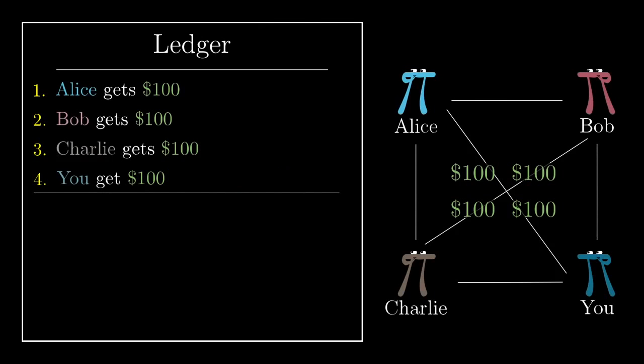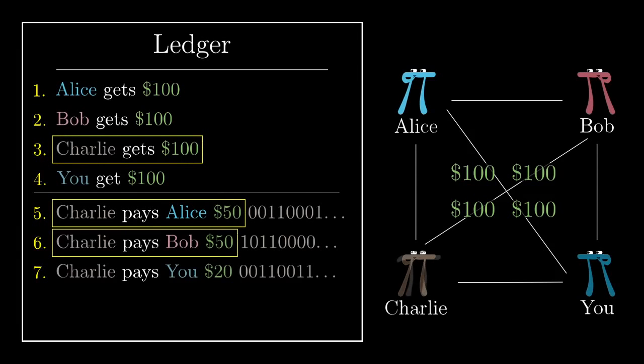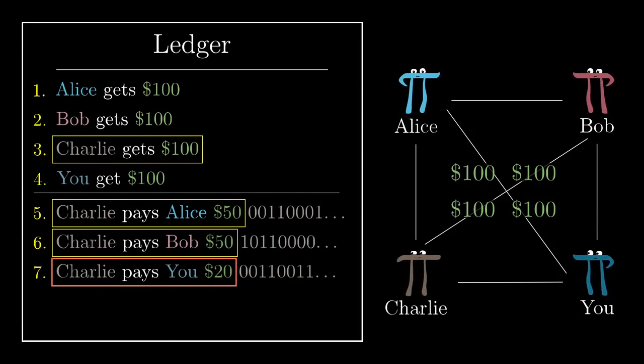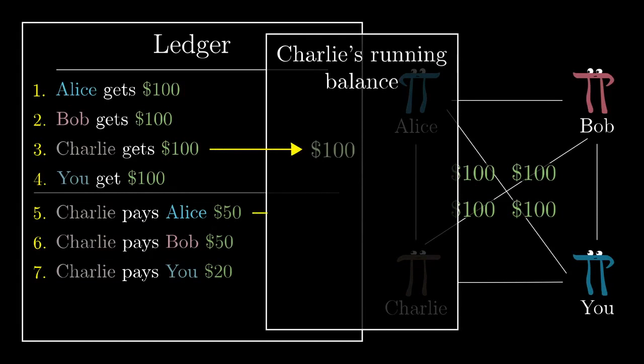Now, just don't accept any transactions where someone is spending more than they already have on that ledger. For example, if the first two transactions are Charlie pays Alice $50 and Charlie pays Bob $50, if he were to try to add Charlie pays you $20, that would be invalid, as invalid as if he had never signed it. Notice, this means that verifying a transaction requires knowing the full history of transactions up to that point. And this is, more or less, also going to be true in cryptocurrencies, though there is a little room for optimization.